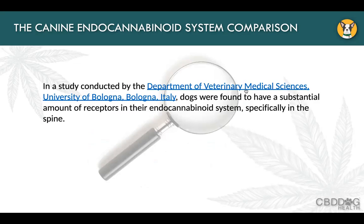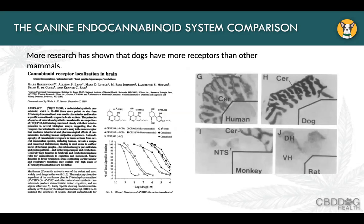Dogs are often the study model for everybody else. In a study from Italy, dogs were found to have many more endocannabinoid receptors, especially in the brain and spine. Photomicrographs of the cerebellum show the G picture is human, H is dog, I is monkey, and then rat. The darkness indicates the density of CBD receptors in the cerebellum, which is astonishing — and this is also the reason why dogs are a lot more sensitive to it than we are. Cats are lower in density.